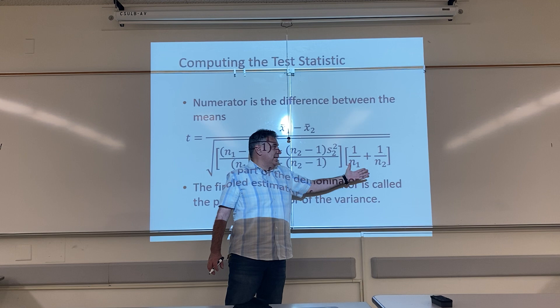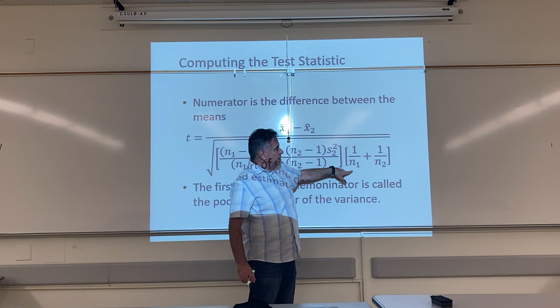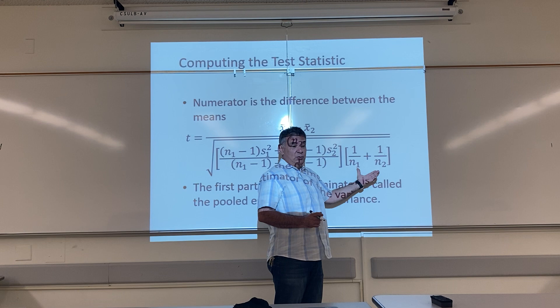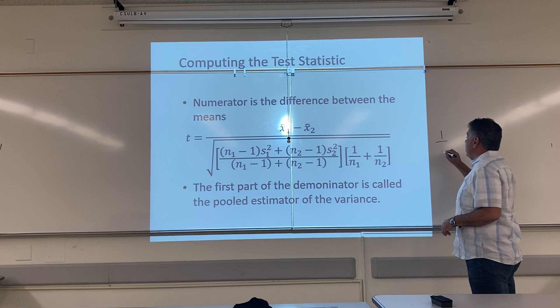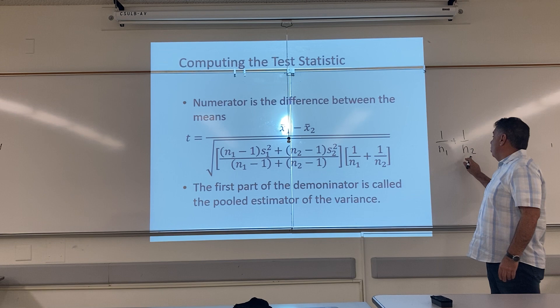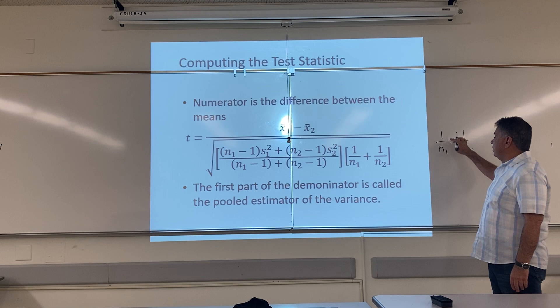Let me show you that the second fraction is actually us adding two fractions. We have one over the sample size of group one, plus one over the sample size of group two. So this is another way you can write it — it might be easier to remember. How does this change into the formula I just showed you? Well, when you have two fractions with different denominators, how do you add them? First you have to change them so they have common denominators — basically we're going to do something like cross multiplication.